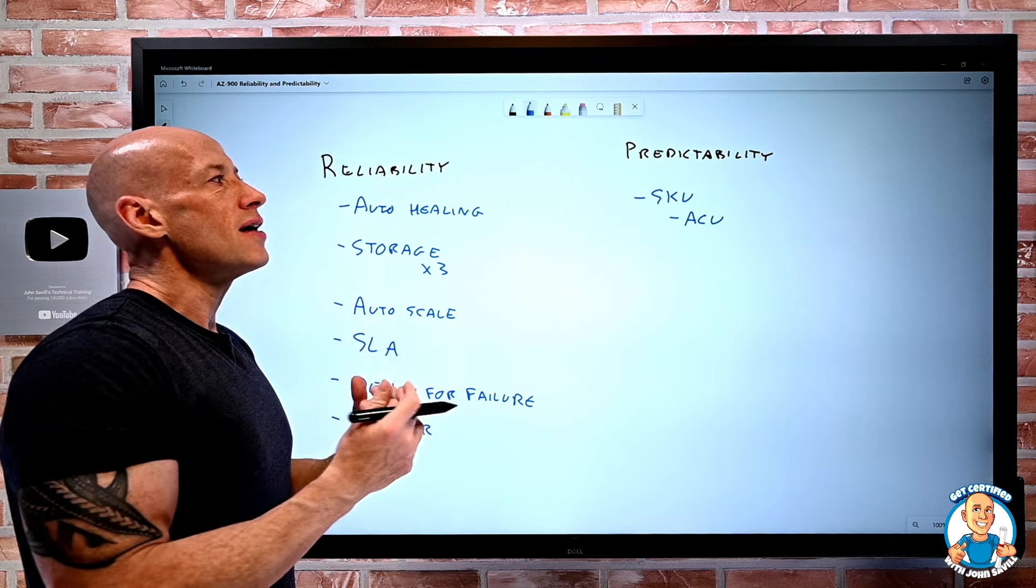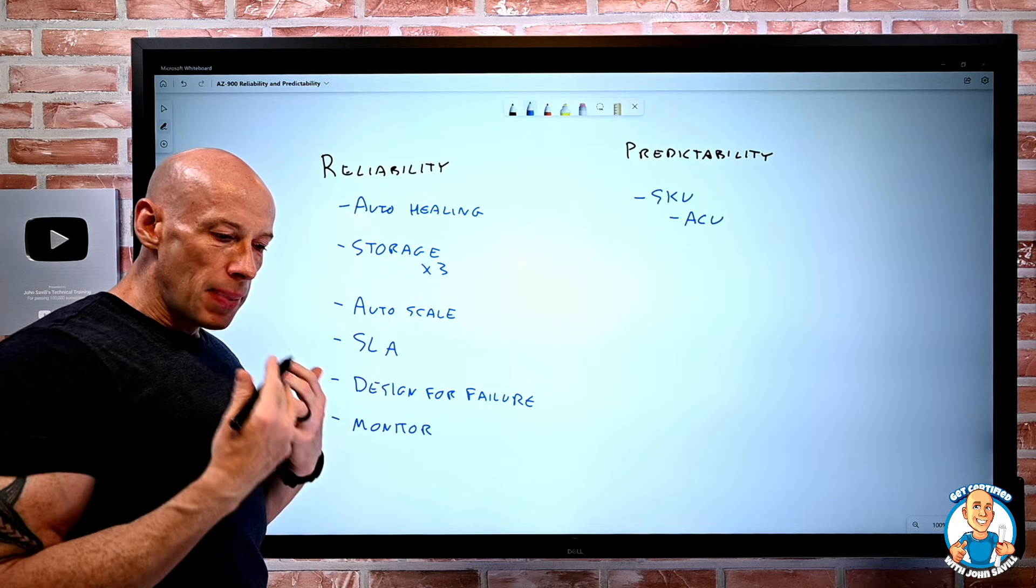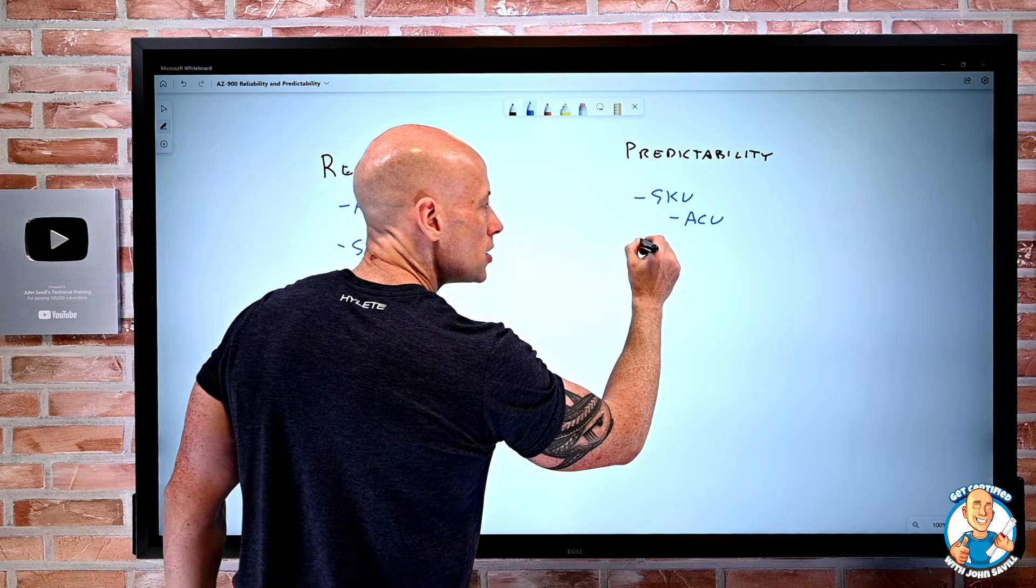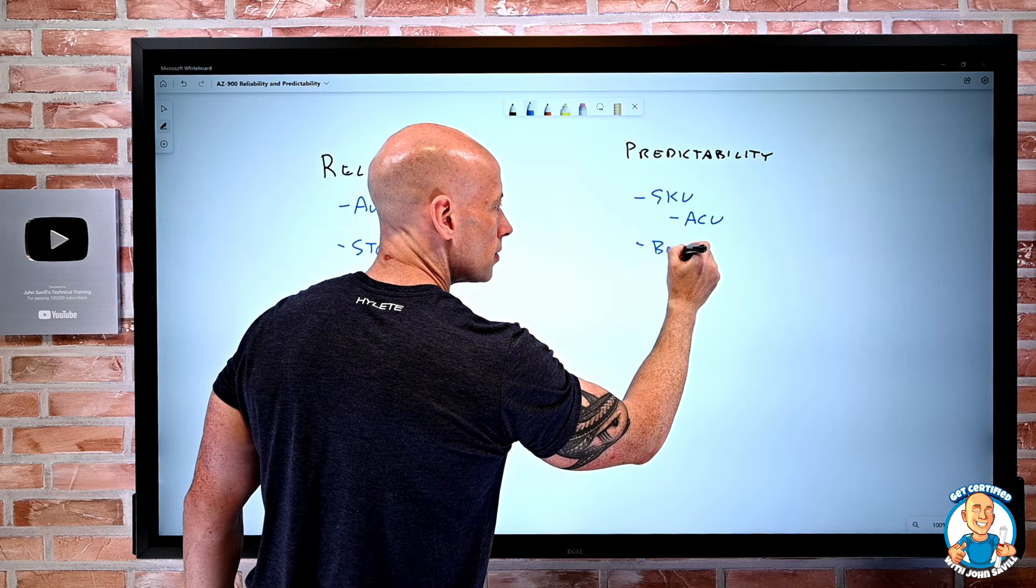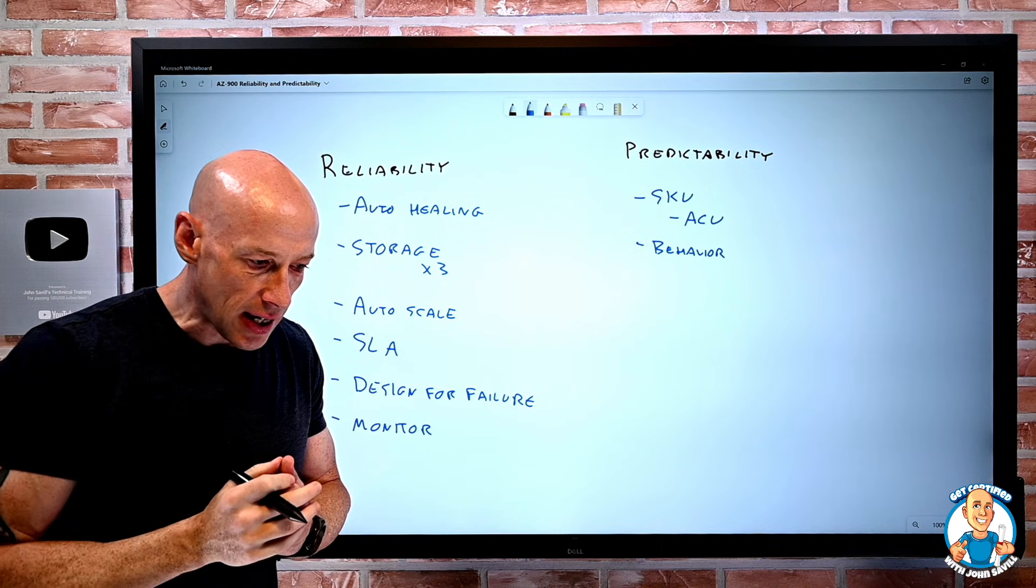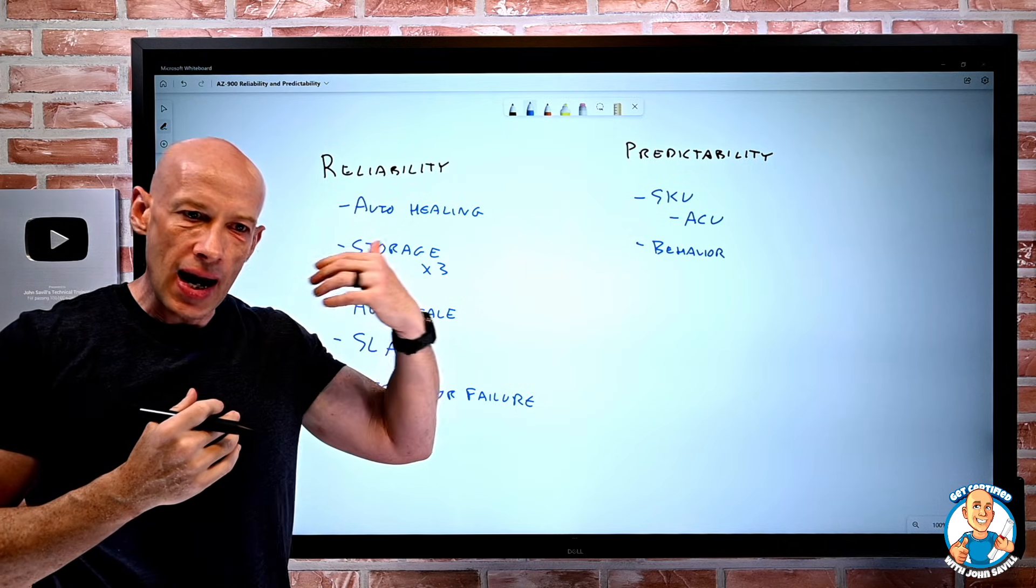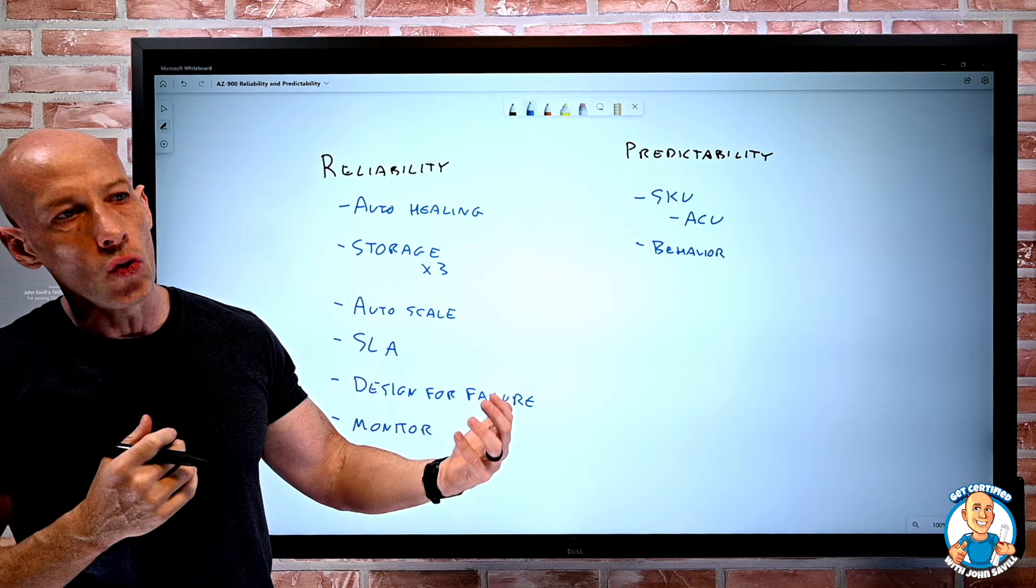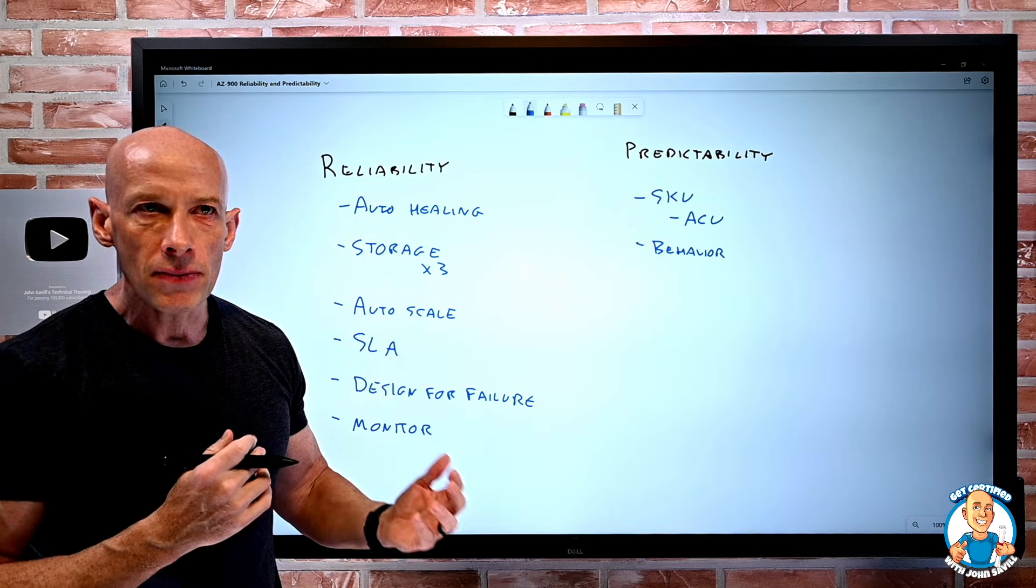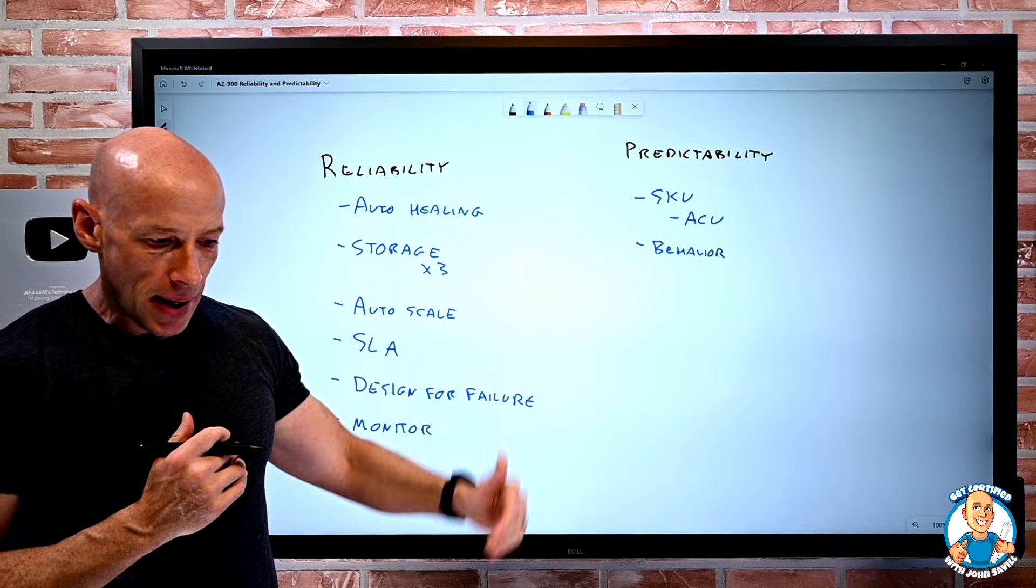So we get very specific dimensions of what is the performance we're going to get. I also get predictability in the form of behavior. So I can think about I have these very specific ways I can interact. I have the ideas of different APIs. I have certain tools. I can use a template. I get predictable pricing based on the region. So there's a lot of predictability about this.